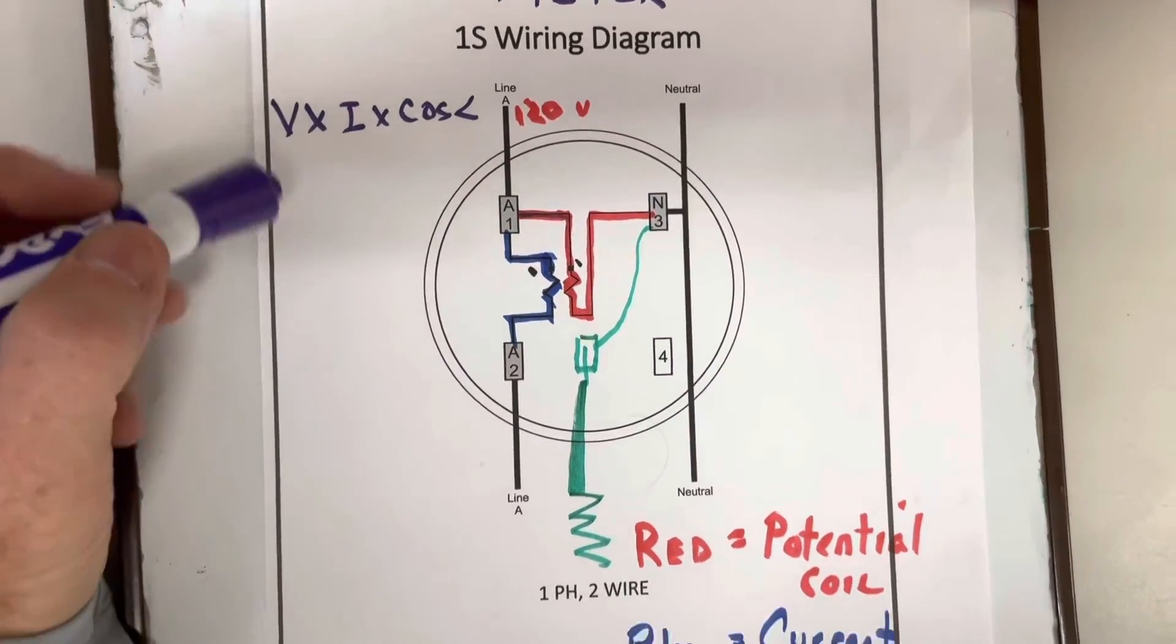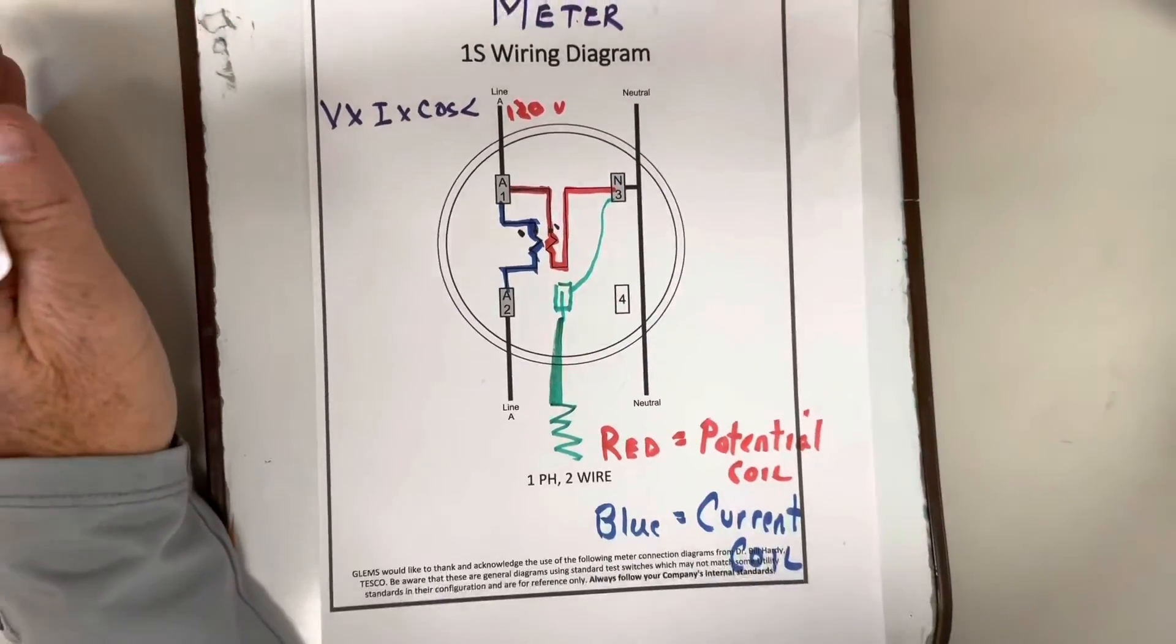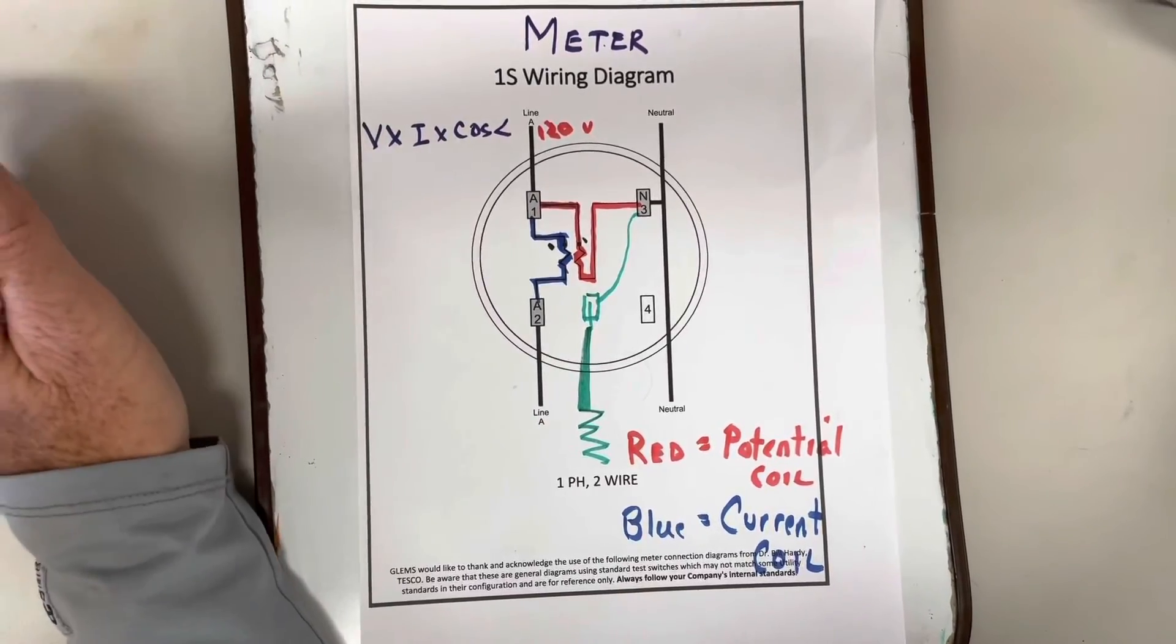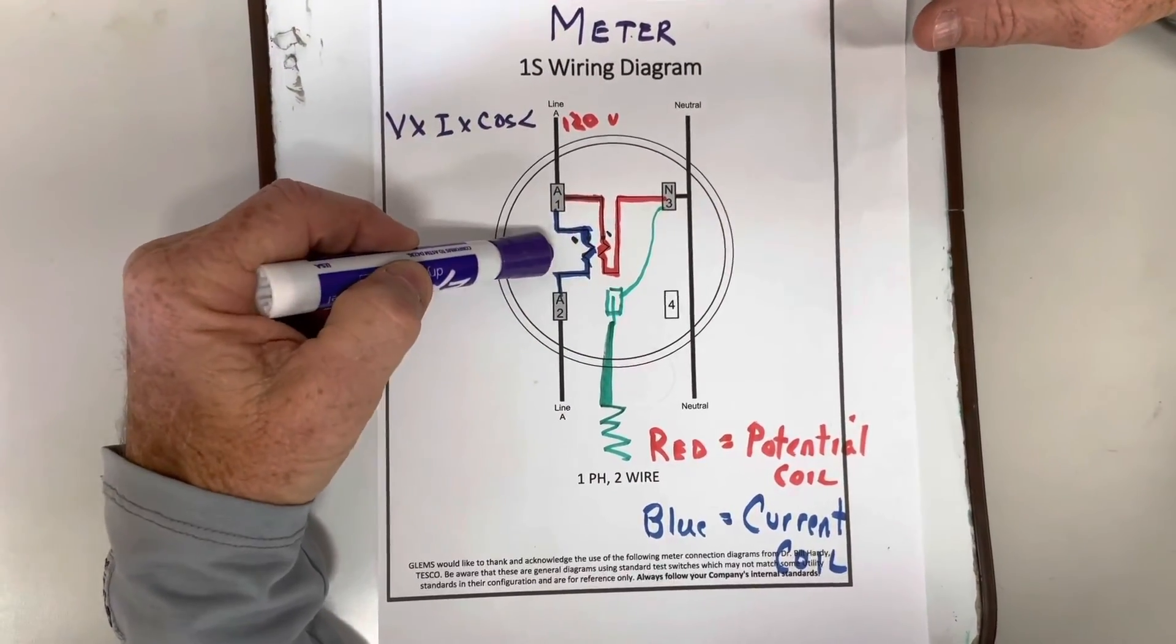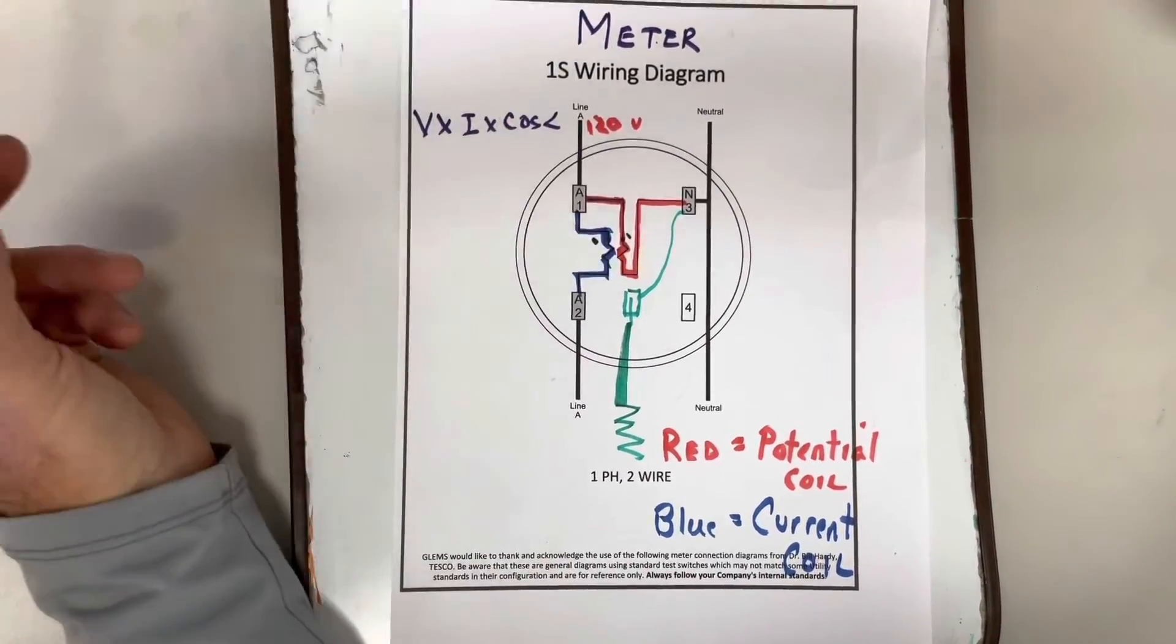Just like anything, it has to measure voltage times current times cosine angle to get watts. So you have to have a current coil and a voltage coil in order to meter anything.